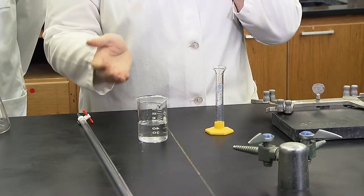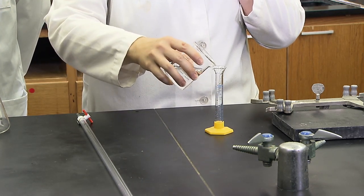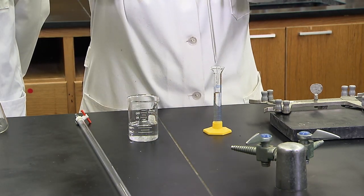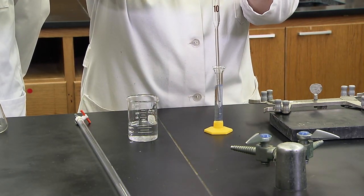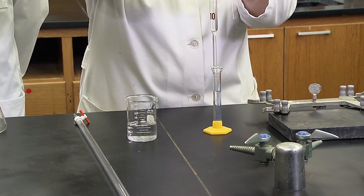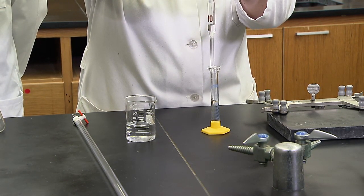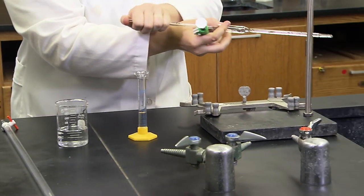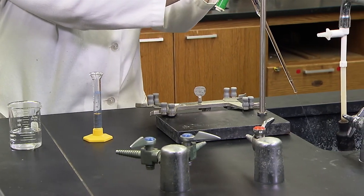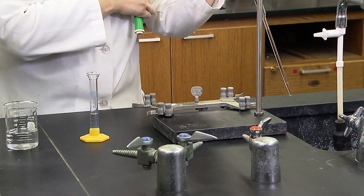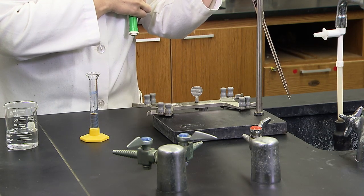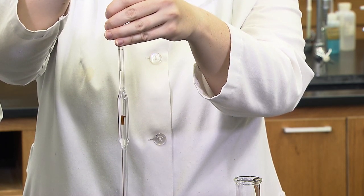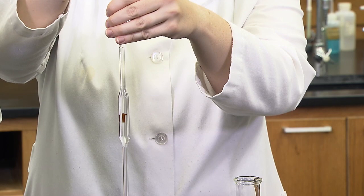There is enough sulfuric acid solution in this beaker for all the trials of this experiment. A little is used to condition the pipette. Remember to handle acids with care. Now, measure the 10.00 milliliters of sulfuric acid solution into the clean reaction flask.